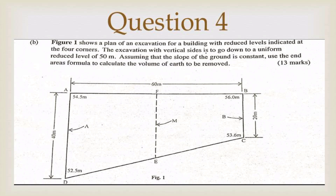That is question number 4b: 'The figure below shows a plan of an excavation for a building, with the reduced level indicated at the four corners. The excavation with vertical sides is to go down to a uniform reduced level of 50 meters. Assuming that the slope of the ground is constant, use the end areas formula to calculate the volume of earth which is to be removed.' Here we have been given the plan of our land which needs some excavation.